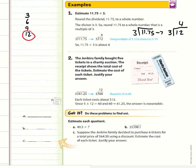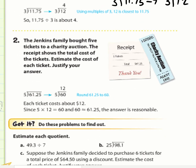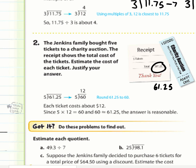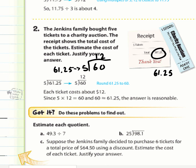Example 2: The Jenkins family bought five tickets to a charity auction. The receipt shows a total cost of $61.25. Thinking of numbers compatible with 5, we change $61.25 to $60. So $60 ÷ 5 = 12 — each ticket costs approximately $12.